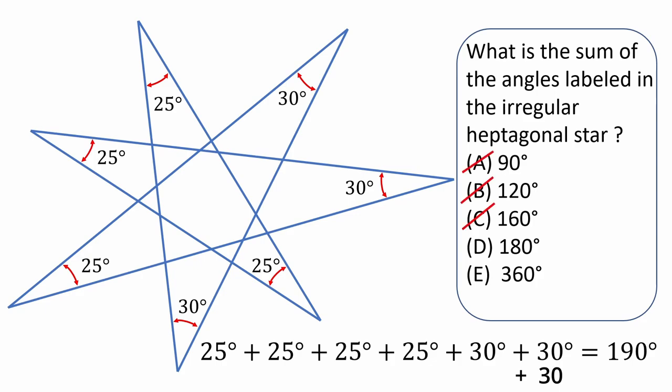Those angles are too small. Choice E seems too large, so you could safely and confidently go with 180 degrees, which happens to be the correct answer. But this method is obviously flawed because it's basically a lucky guess. The next method is much improved.